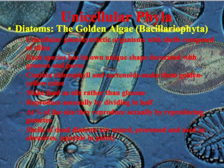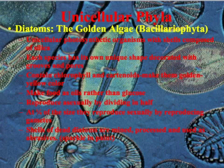Diatoms make food as oils rather than glucose, and this is actually where they are becoming cutting edge for biofuels. They reproduce asexually by dividing in half, and at minimum size they reproduce sexually by producing gametes. The shells of diatoms are actually mined, processed, and used as abrasives — you'll often see these in sparkle paint, specifically road paint applied on highways.